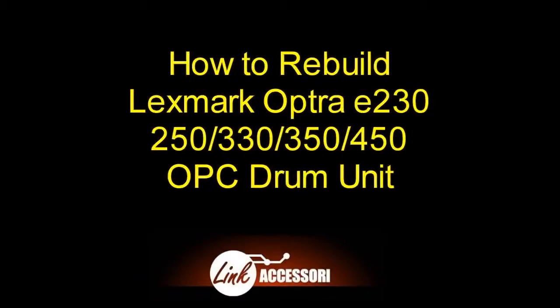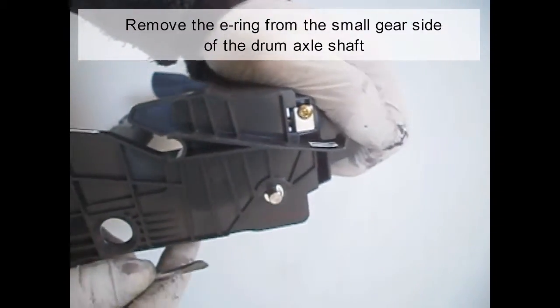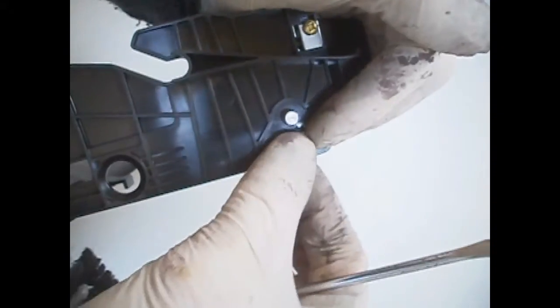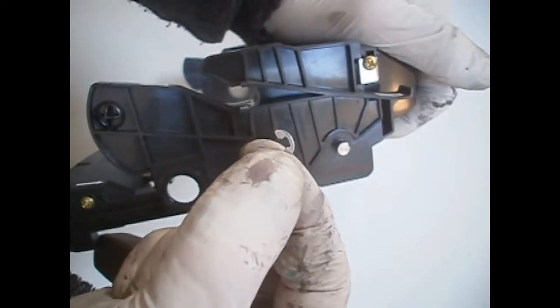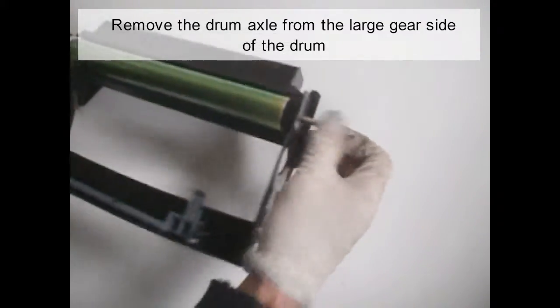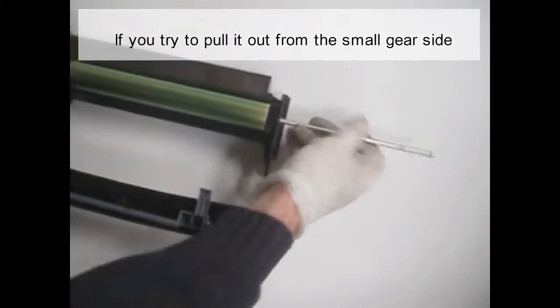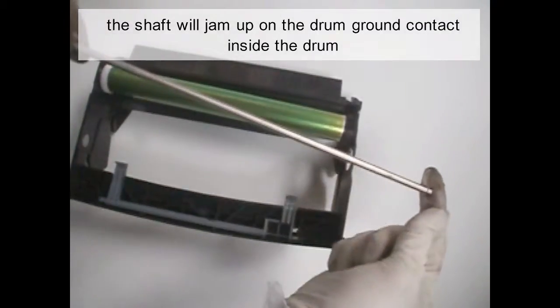Remove the E-ring from the small gear side of the drum axle shaft. Remove the drum axle from the large gear side of the drum. If you try to pull it out from the small gear side, the shaft will jam up on the ground contact inside the drum and damage the contact.